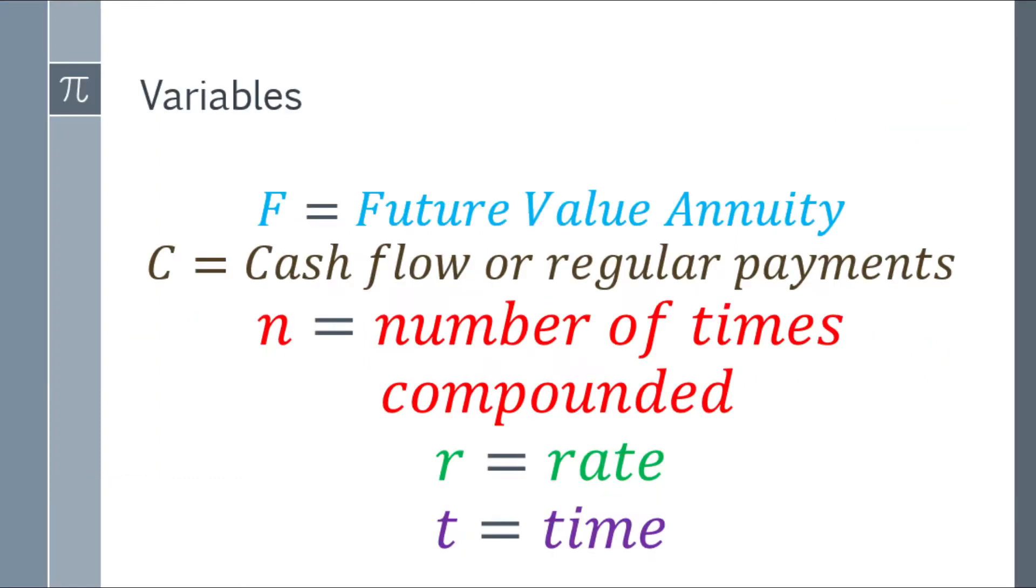Ano ba yung mga variables na gagamitin natin dito sa Future Value Ordinary Annuity? We are going to use letter F for Future Value Annuity, letter C for the cash flow or regular payments, small letter n for the number of times compounded, and r for the rate and t for the time.